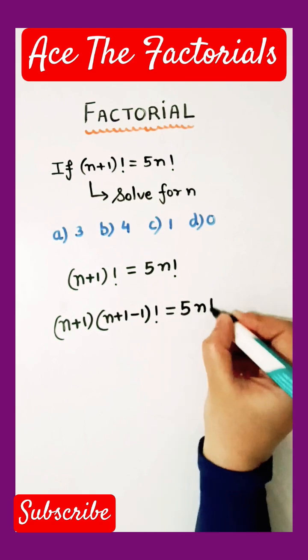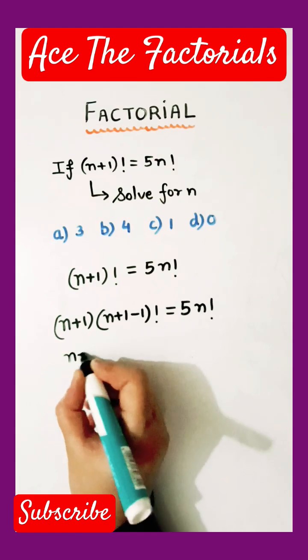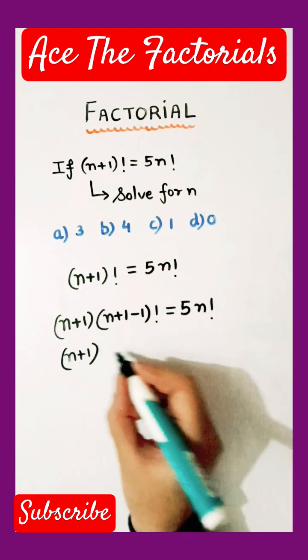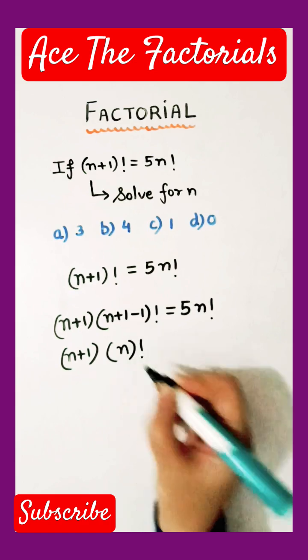The right hand side is still the same. We have not altered this one. So it will become n plus 1 in the first bracket and the second one is n factorial.